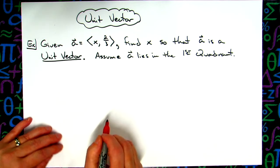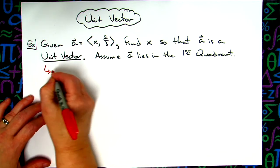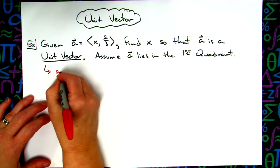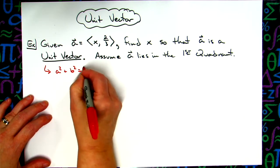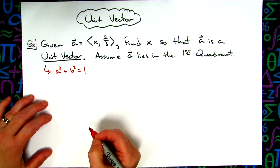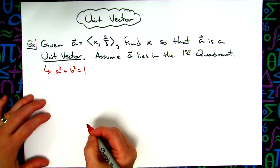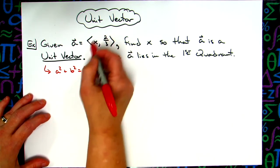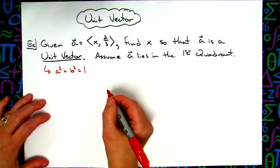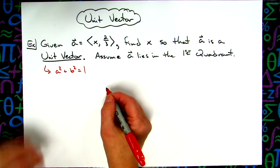The key thing you need to remember about unit vectors is that a squared plus b squared is going to equal one. Knowing that, I can take my values for a and b, plug them in, create an equation, and then solve for x.